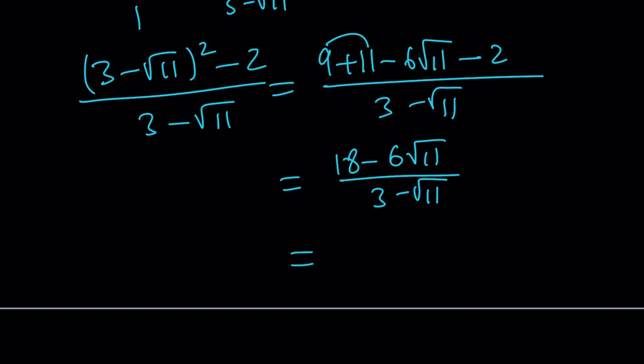And as before, we can take out a 6 and write this as 3 minus root 11 times 6 divided by 3 minus root 11. 3 minus root 11 again does not equal 0 because root 11 does not equal 3. I was supposed to write does not equal 0. Obviously it's not equal to 3 either, but that's not the point. 3 minus root 11 cancel out, and we end up with 6 for the value of x minus 2 over x.